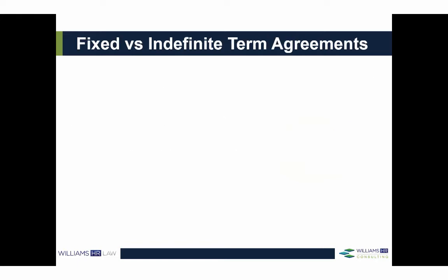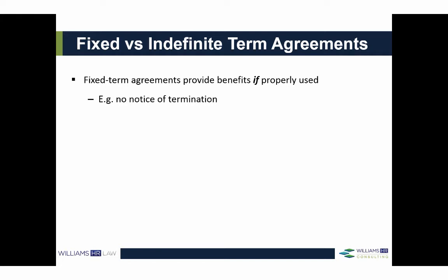It's important to consider at the outset whether you need a fixed-term or an indefinite-term employment agreement. Most agreements in Ontario are for an indefinite term, terminated only by providing the applicable notice required at common law, under contract, or under the Employment Standards Act. Fixed-term agreements are typically used for employees employed for a predetermined limited period. One key benefit is that you are not required to provide notice of termination at the end of a fixed term, since the end date is predetermined before the relationship begins.